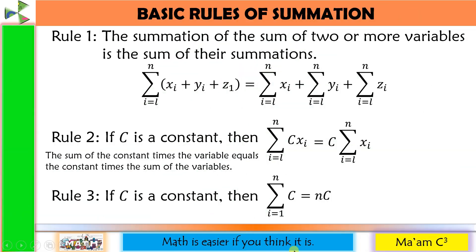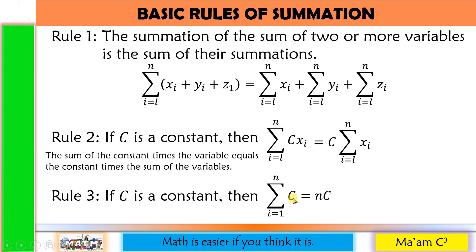Here are the basic rules of summation. Rule number 1: if C is a constant, then the sum of the constant times the variable equals the constant times the sum of the variables. Rule number 3: if C is a constant, then the summation of a constant, I going from 1 to N, is equal to N times the constant. So if you are given only a constant, simply multiply the upper limit by the constant.